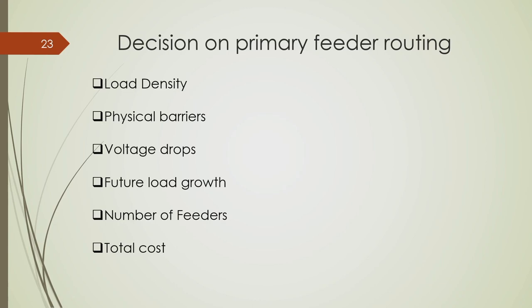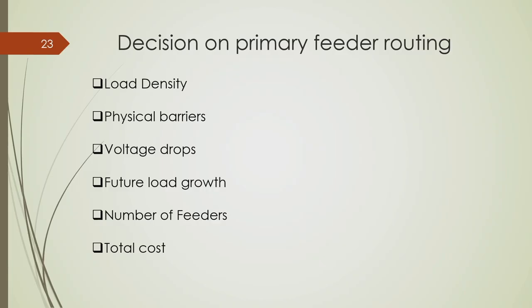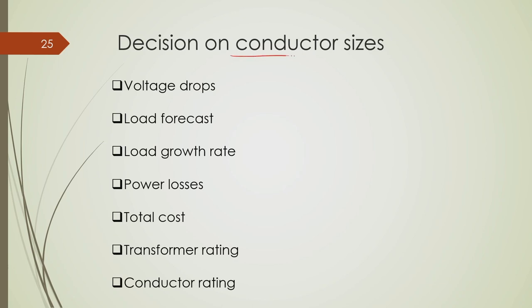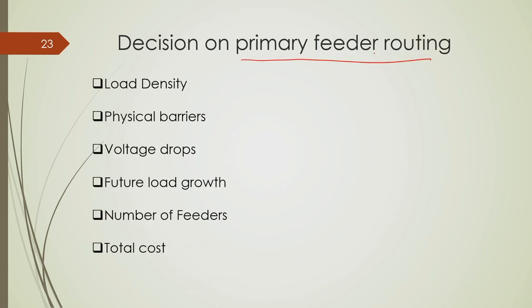Before I start the analytical aspects of the radial distribution network, I will talk about three important aspects while designing a distribution network as a whole. There are three important decisions involved: one is decisions on primary feeder routing, one is a decision on number of feeders, and another is a decision on conductor sizes. These three are important decisions that a distribution network planner should make based upon certain aspects.